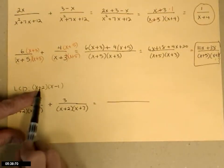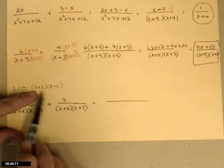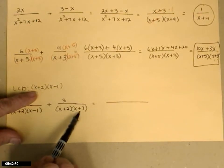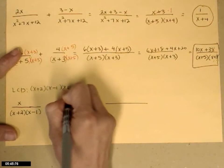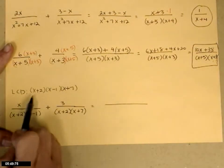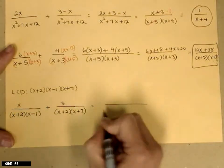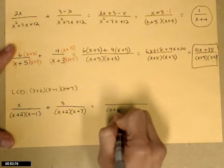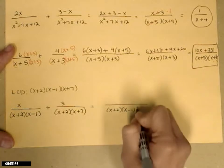So in this example, x plus 2, I have one of those, so I don't need another one for this one. But I also need an x plus 7, which I don't have. So I'm going to go ahead and multiply in an x plus 7. This is my lowest common denominator, so I'll go ahead and copy that in my answer spot.